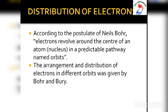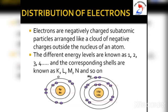The maximum number of electrons which can be put in a particular energy level or shell was given by Bohr and Bury. Electrons are negatively charged and form a cloud outside the nucleus, arranged according to their potential energy in different energy levels. Energy levels are denoted by numbers 1, 2, 3, 4, 5, 6, whereas shells are represented by the letters K, L, M, N, O, P.